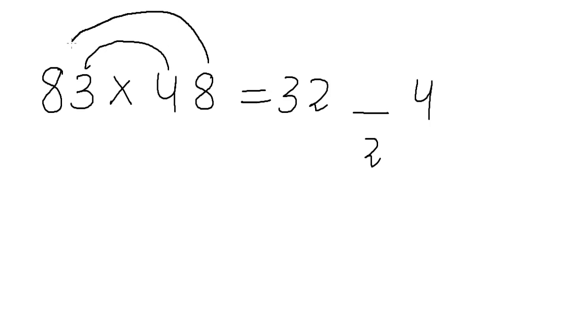So after we are done with this to get this blank digit we multiply in this fashion 4 times 3 plus 8 times 8. 4 times 3 is 12. 8 times 8 is 64. 64 plus 12 is 76.